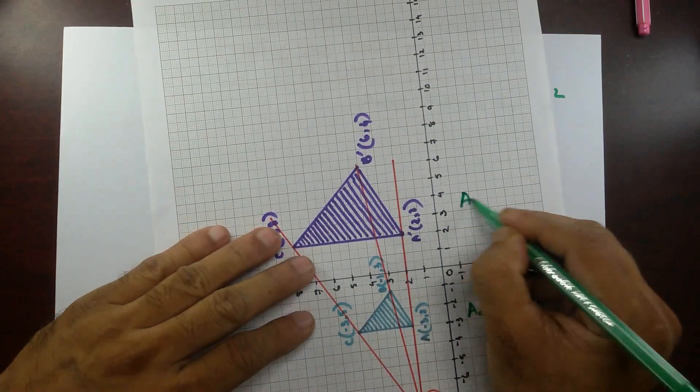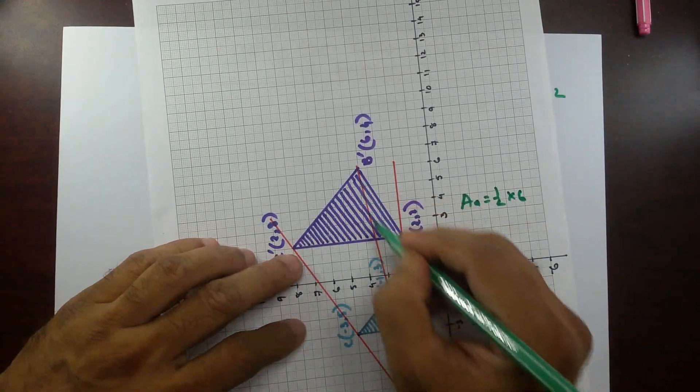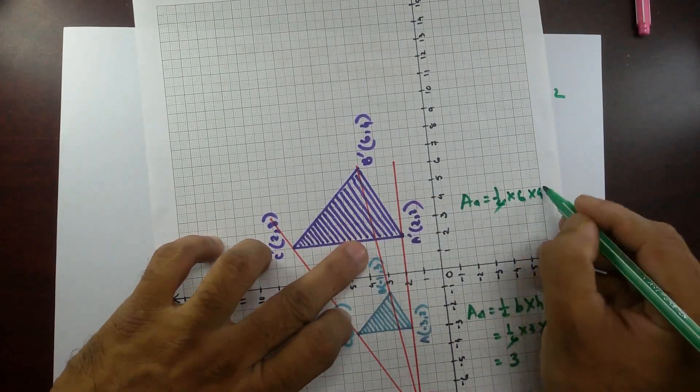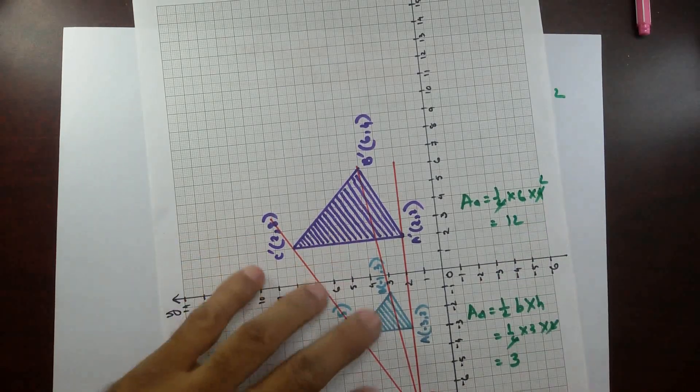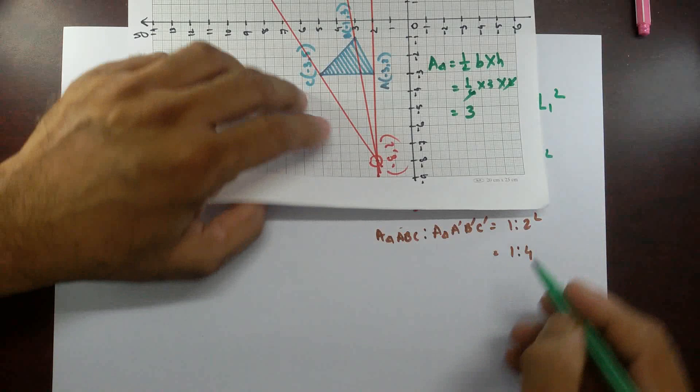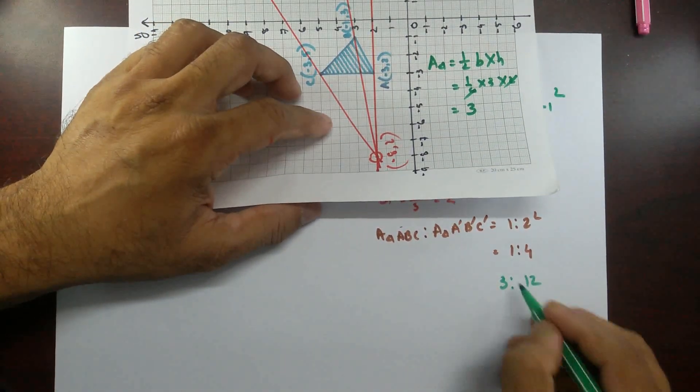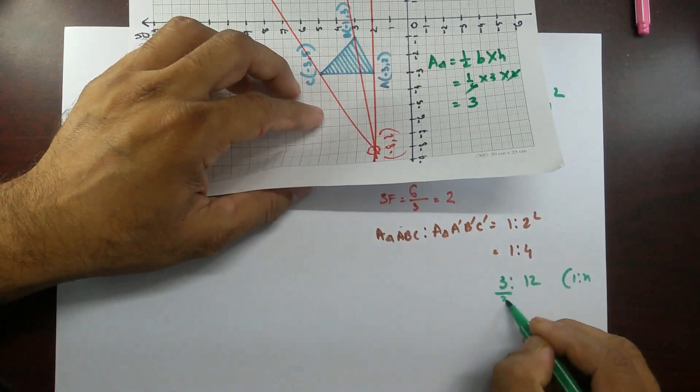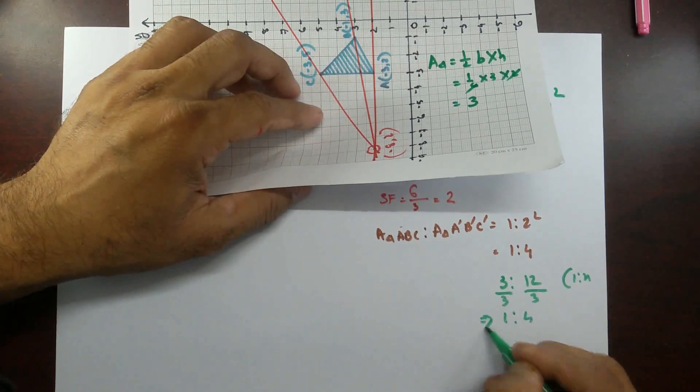For this area of this triangle, half. Now base is 6. And then height is 1, 2, 3, 4. That's 4. So cross it out. So 6 times 2 is 12. So whenever you are putting these values over here, 3 is to 12. Now if we put in the form of 1 is to n, so divided by 3, divided by 3, 1 is to 4. That's that.